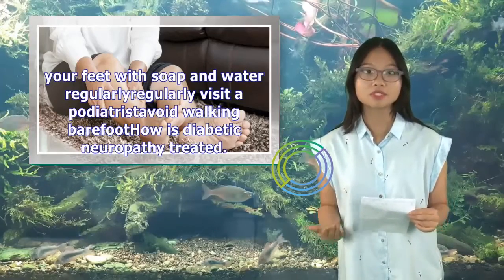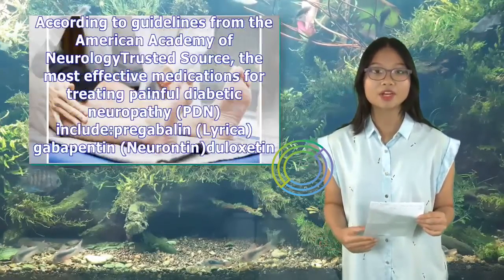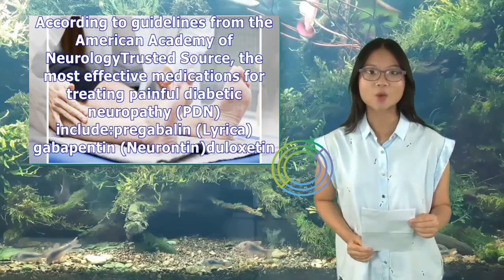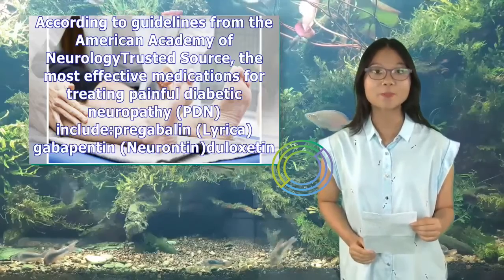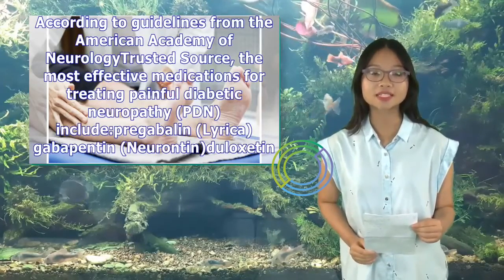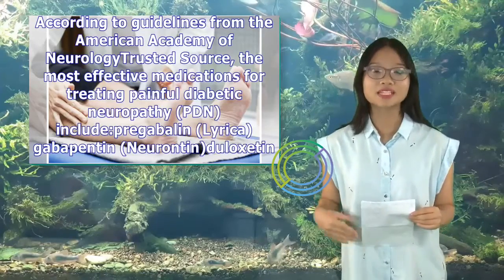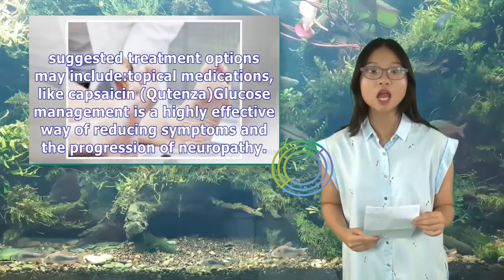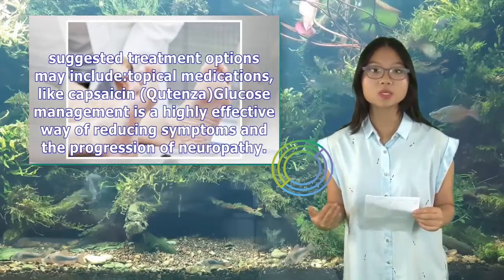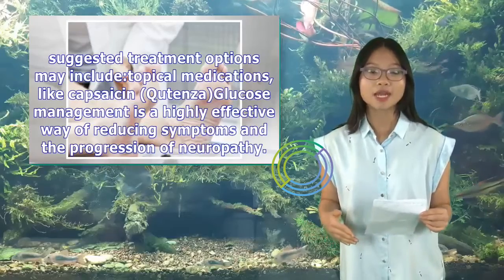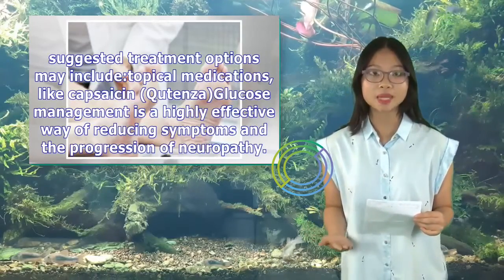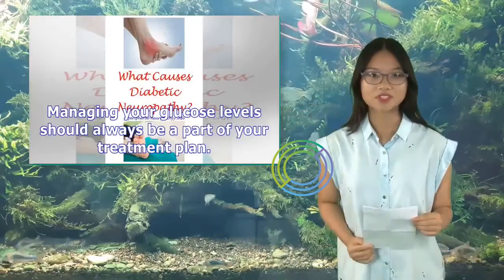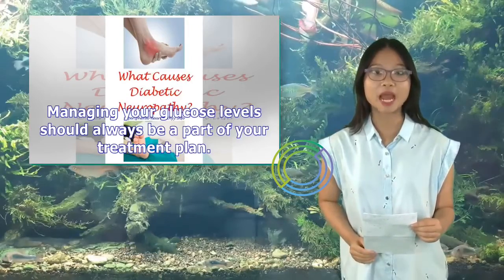How is diabetic neuropathy treated? According to guidelines from the American Academy of Neurology, the most effective medications for treating painful diabetic neuropathy (PDN) include pregabalin (Lyrica), gabapentin (Neurontin), duloxetine (Cymbalta), venlafaxine (Effexor), and amitriptyline. Other suggested treatment options may include topical medications like capsaicin (Qutenza). Glucose management is a highly effective way of reducing symptoms and the progression of neuropathy and should always be part of your treatment plan.